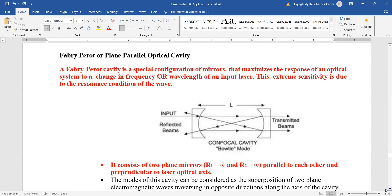A Fabry-Perot cavity is a special configuration of mirrors that maximizes the response of an optical system to a change in frequency or wavelength of an input laser. This extreme sensitivity is due to the resonance condition of the wave.